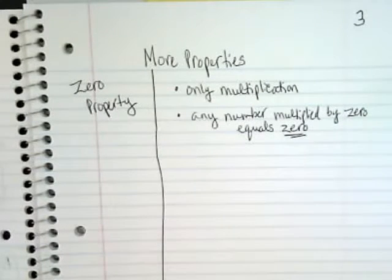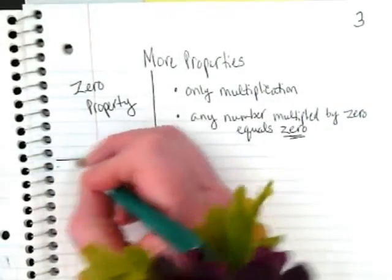Taking a look around the room, there's two posters left that we haven't identified. Which one do you think is the zero property? Just go ahead and point to it. Good job. Okay, draw a line across.